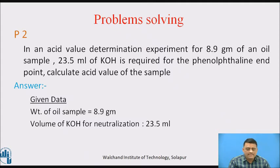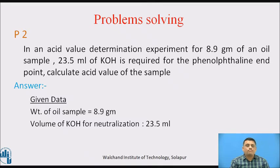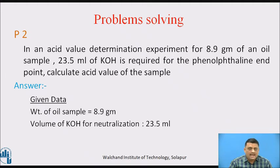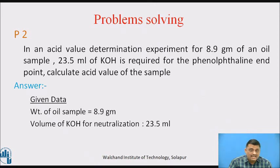One more numerical: In an acid value determination experiment, for 8.9 grams of an oil, 23.5 ml of KOH is required for the phenolphthalein endpoint. Calculate the acid value of the sample. In this numerical, we use 8.9 grams of oil and carry out the neutralization, observing that 23.5 ml of KOH has been consumed. We use phenolphthalein as indicator and the endpoint is colorless to pink. When pink color is obtained, we stop the addition — here 23.5 ml of KOH was required.